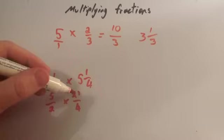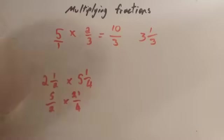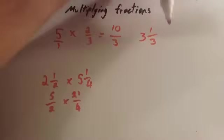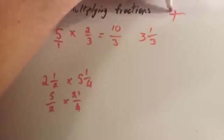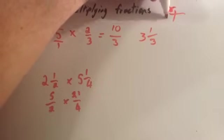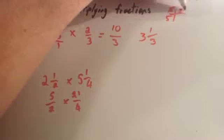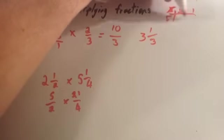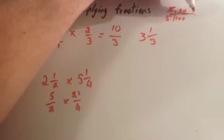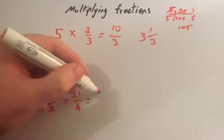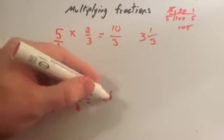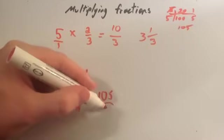We want to multiply the top numbers together and multiply the bottom numbers together. Five times twenty-one — I'm going to use the grid method for that. Five multiplied by twenty-one: five times twenty is one hundred, five times one is five, add them together: one hundred and five.